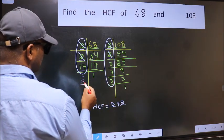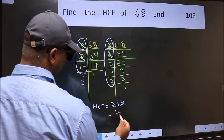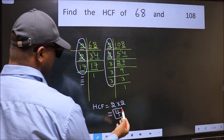No more numbers are left out. So our HCF is 2 times 2, 4 is our HCF.